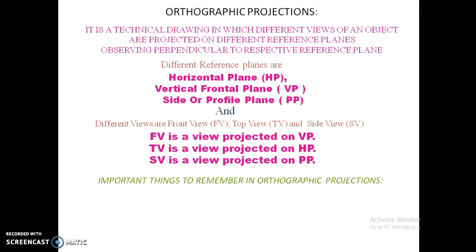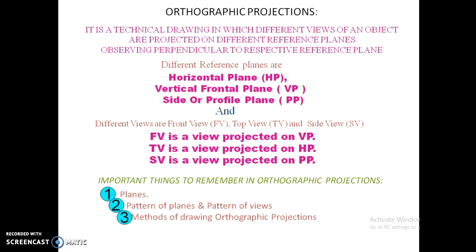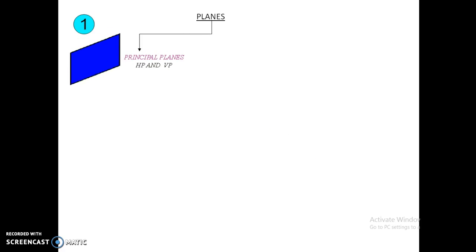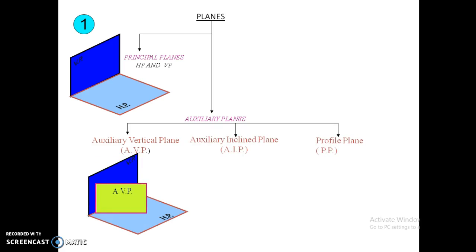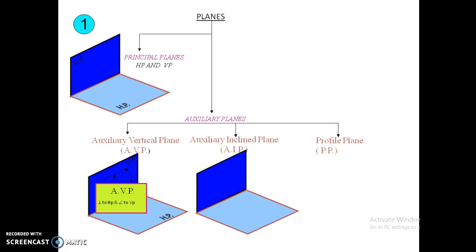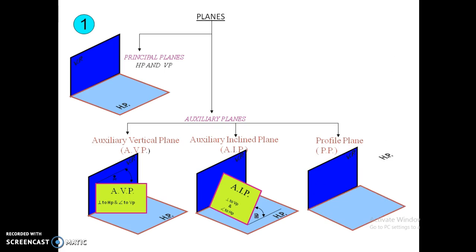There are three important things to remember when considering orthographic projections: first, planes; second, pattern of planes and pattern of views; and third, method of drawing orthographic projections. For planes, we have two principal planes — HP and VP — and the auxiliary planes: the auxiliary vertical plane, which is perpendicular to HP and inclined to VP, and the auxiliary inclined plane, which is perpendicular to VP and inclined to HP. We also have the profile plane, where we draw the side view, and the profile plane is perpendicular to both HP and VP.